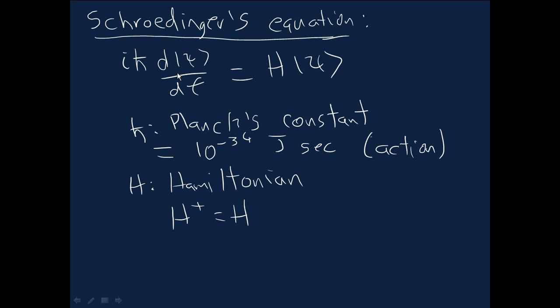So, the essence of this—Planck's constant isn't really so important. The essence of this is that the time rate of change of the state psi is determined by the Hamiltonian of the system, a Hermitian matrix, and by the state psi itself through this equation. And that's really the essential content of the continuous time analog of postulate 2.